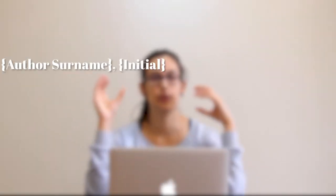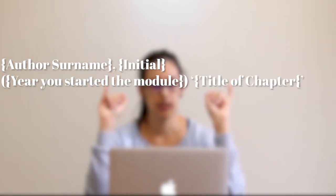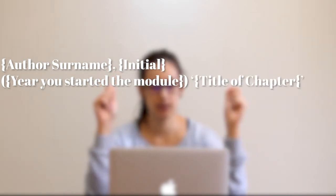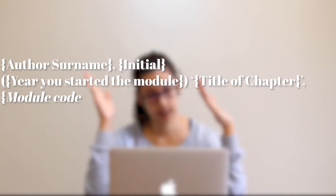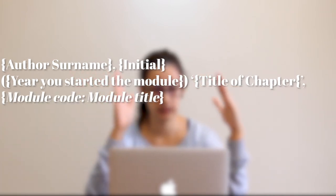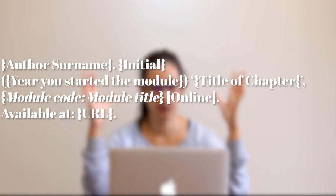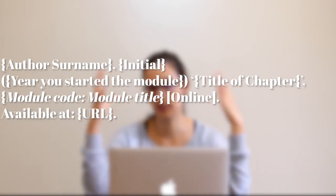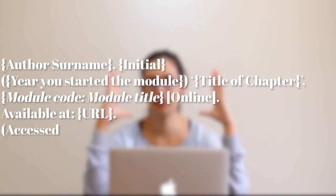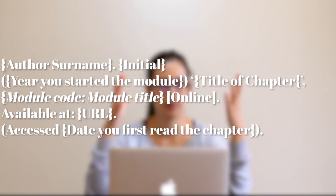If you have online chapters, the reference list would be: author surname, initial, in parentheses the year you started the module, in small quotations title of chapter, comma, italics module code, colon, module title, in straight brackets online, available at the URL of the relevant chapter, then in parentheses accessed followed by the date you first read the chapter.